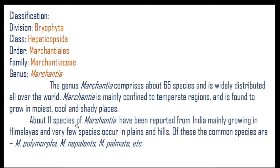Eleven species of Marchantia have been reported from India, mainly growing in the Himalaya. Very few species occur in plains and hills. The common species are Marchantia polymorpha, Marchantia nepalensis, and Marchantia palmata.